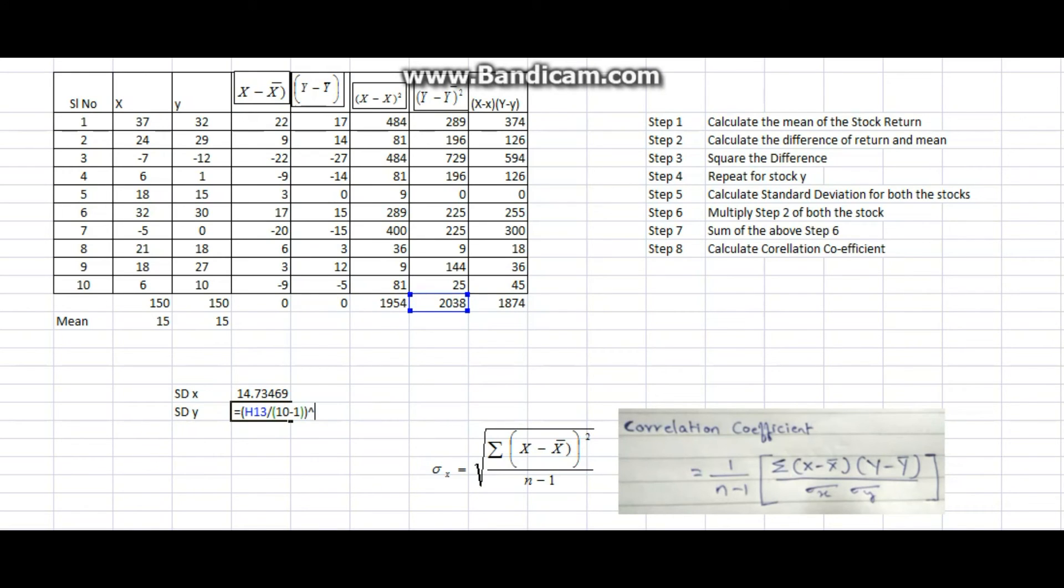Raised to bracket 1 divided by 2. Square root can be written as 1 divided by 2. So I get standard deviation as around 15.